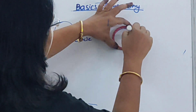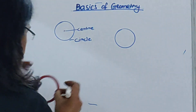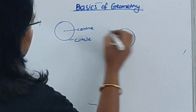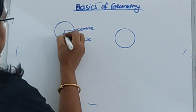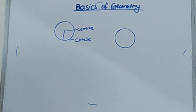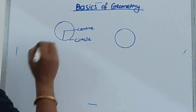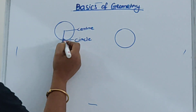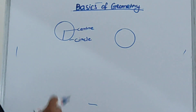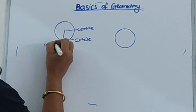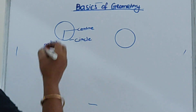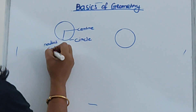Let's draw one more circle. You know this point is called the center. Now we will draw a small line segment from the center to the edge — the periphery — of the circle. That line segment is called the radius, denoted by R.